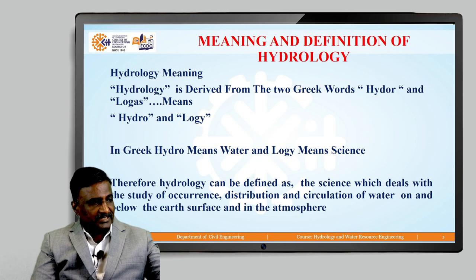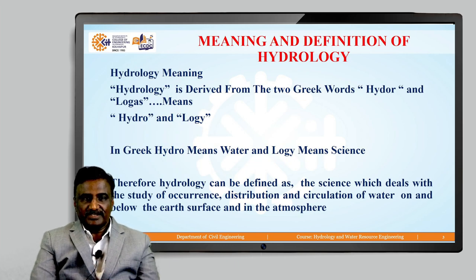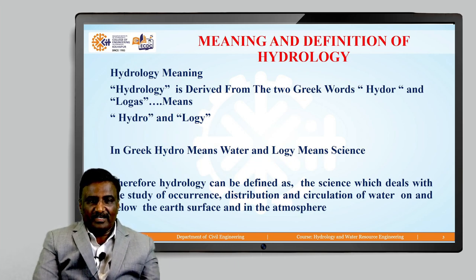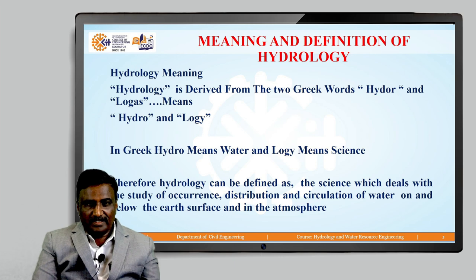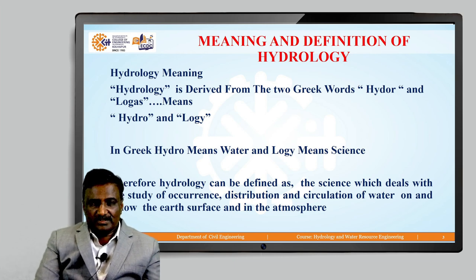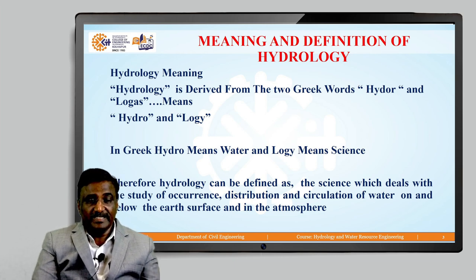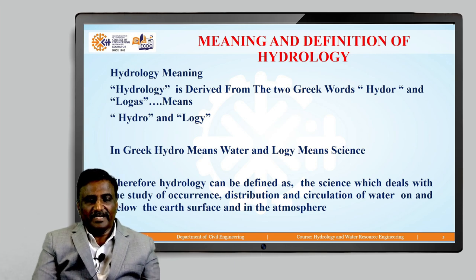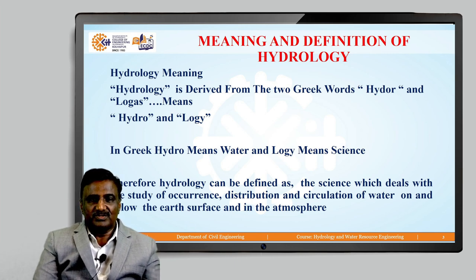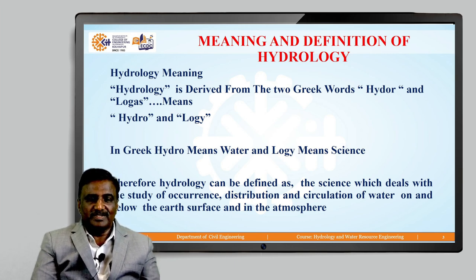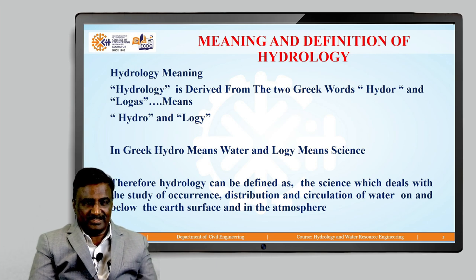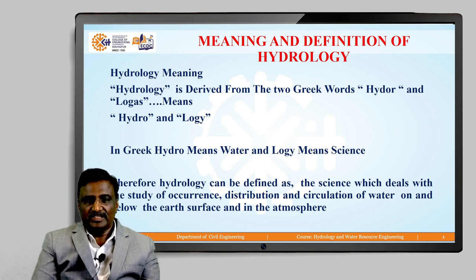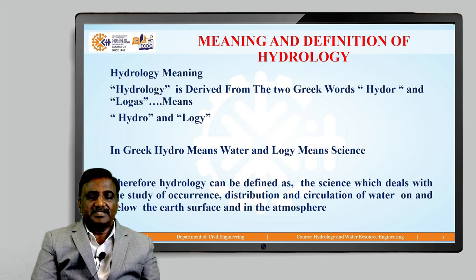First let us see what is the exact meaning of hydrology. Hydrology is a word derived from Greek. In Greek, 'hydros' means water and 'logos' means study or science. Therefore, hydrology is the study or science of water.